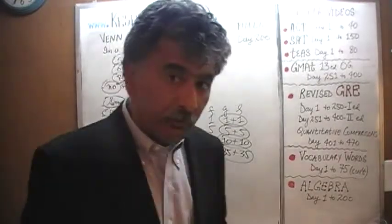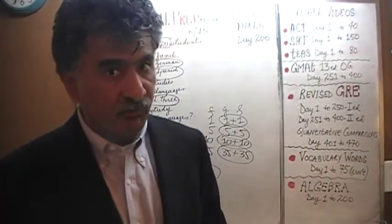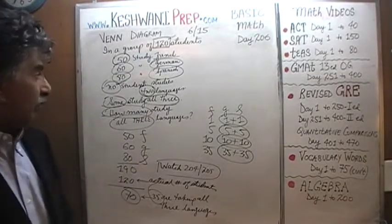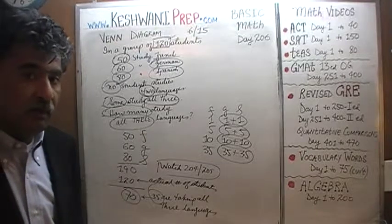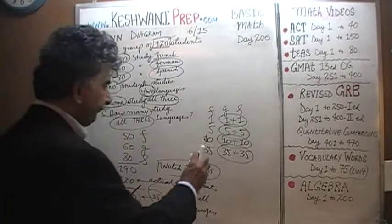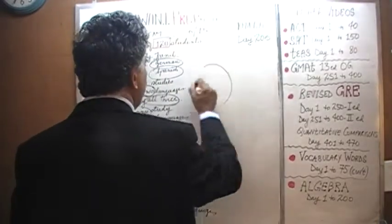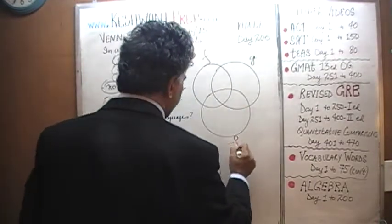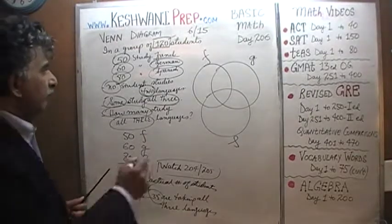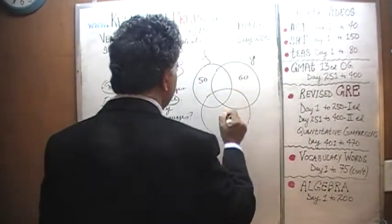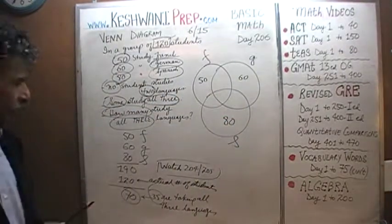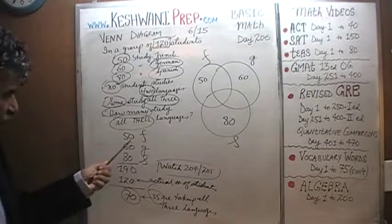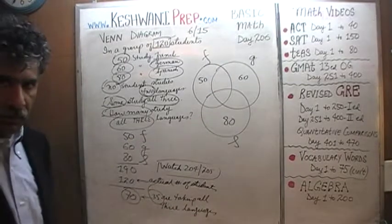We are going to go a couple of steps further for learning purposes and present this information in the form of a Venn diagram, because part of the problem might be presented that way. So here is our French circle, here is our German circle, and here is our Spanish circle. We have 50 people studying French, 60 studying German, and 80 studying Spanish — adding up to 190. When we subtract 120 from it, we have a surplus of 70. We need to do this work in order to move to the Venn diagram step.